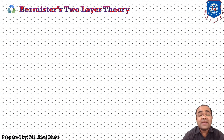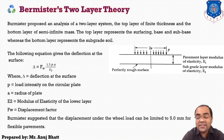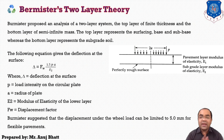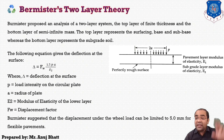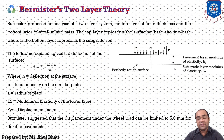Burmister analyzed a two-layer system where the top layer is of finite thickness and the bottom layer is of semi-infinite mass. The top layer represents the surfacing, base, and subbase courses, whereas the bottom layer represents the subgrade soil.